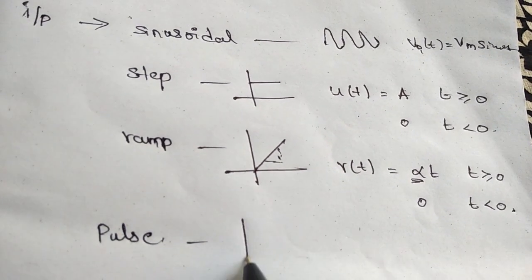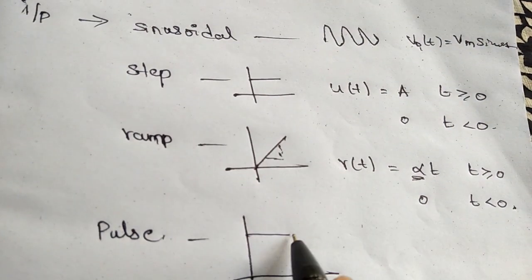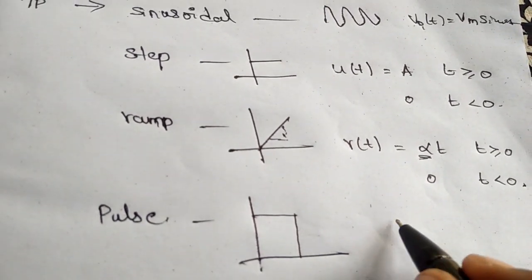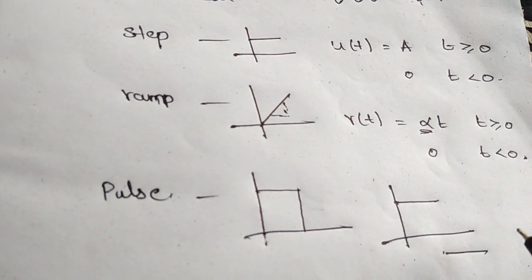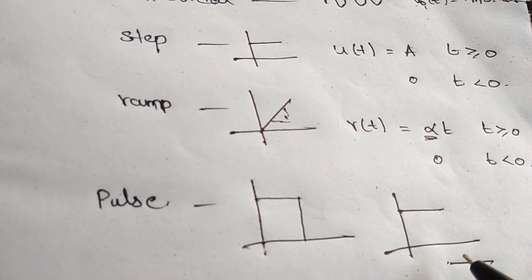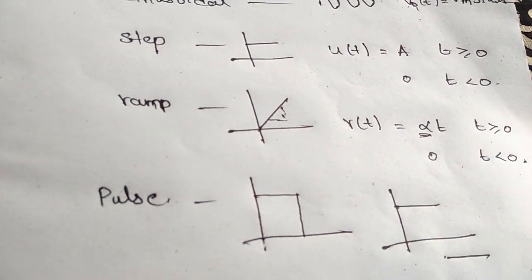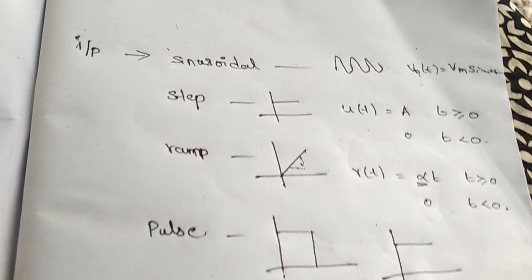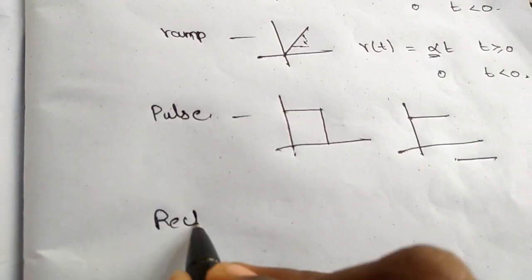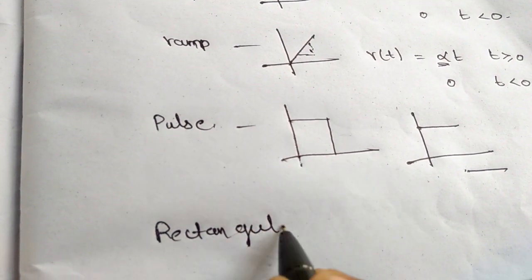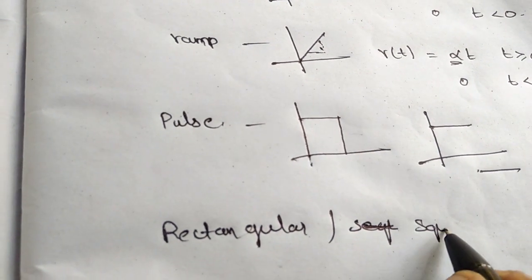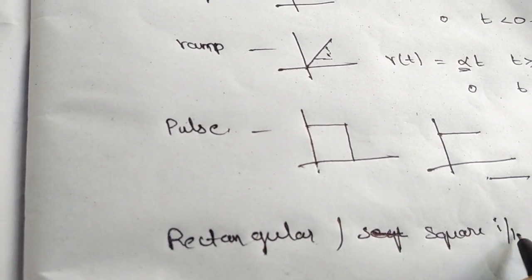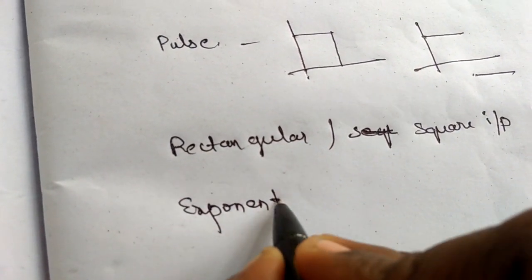The next input is Pulse, which may be defined as the combination of two steps with inverted polarities. We also have rectangular or square input and exponential input.